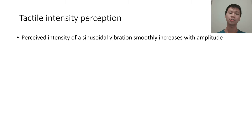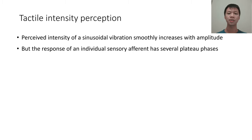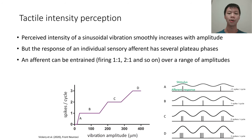When we deliver a sinusoidal vibration on the skin, the perceived magnitude or intensity smoothly increases as a function of amplitude. However, the response of a single sensory afferent has several entrainment plateaus, where the afferent fires one-to-one or two-to-one for each cycle of vibration over a range of amplitudes.